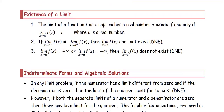Existence of limit. The limit of a function f as x approaches a exists if and only if the limit of f(x) as x approaches a equals L, where L is a real number. If the left-sided limit does not equal the right-sided limit, then the two-sided limit does not exist, and we use the shorthand DNE. Similarly, if the limit equals positive or negative infinity, the limit does not exist and we also write DNE.